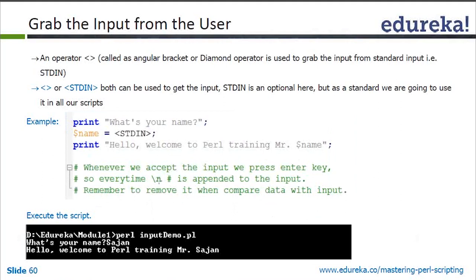For example, running 'perl input_module.pl': it prints 'What's your name?', you type 'Sarjan', and it prints 'Hello, welcome to Perl training Mr. Sarjan'. That's how it works. Then we have the concept of context in Perl.